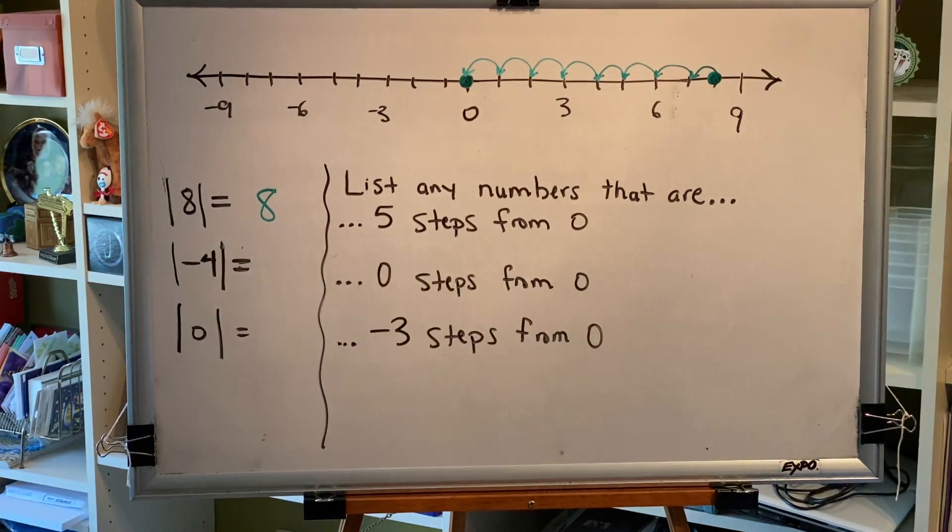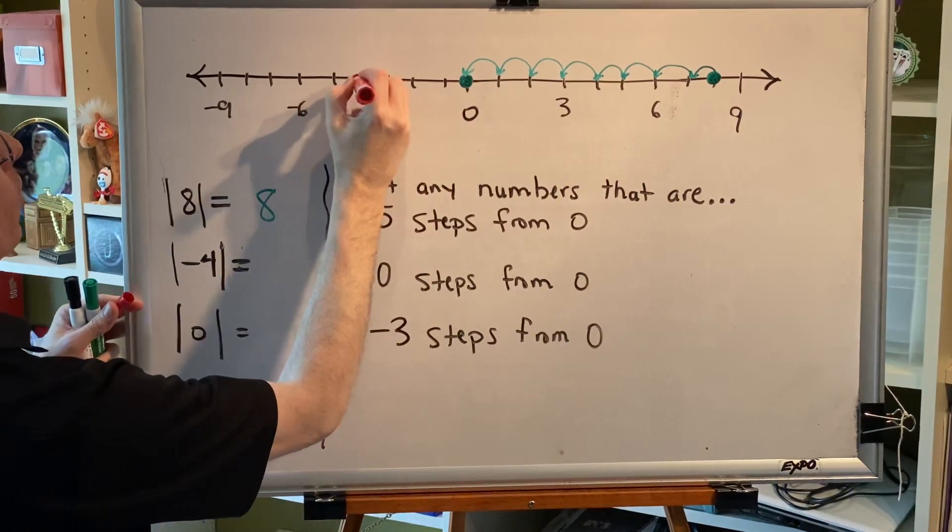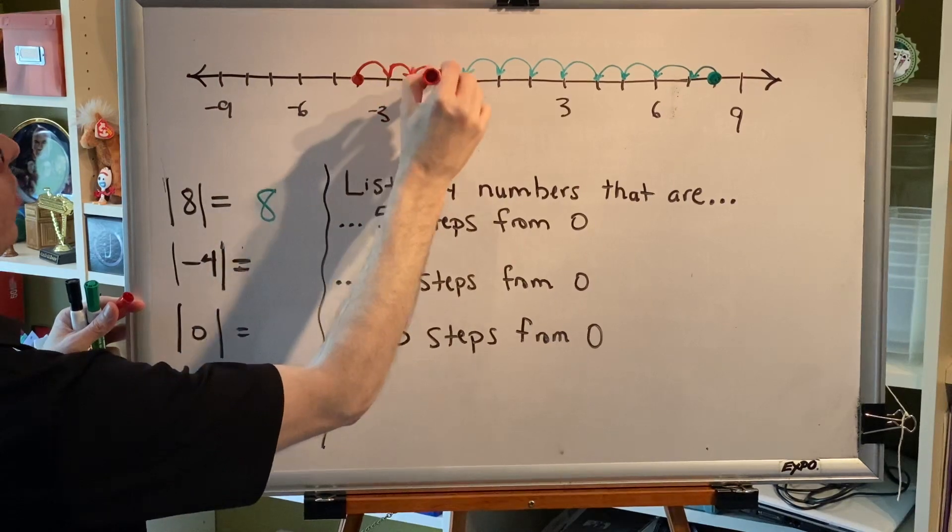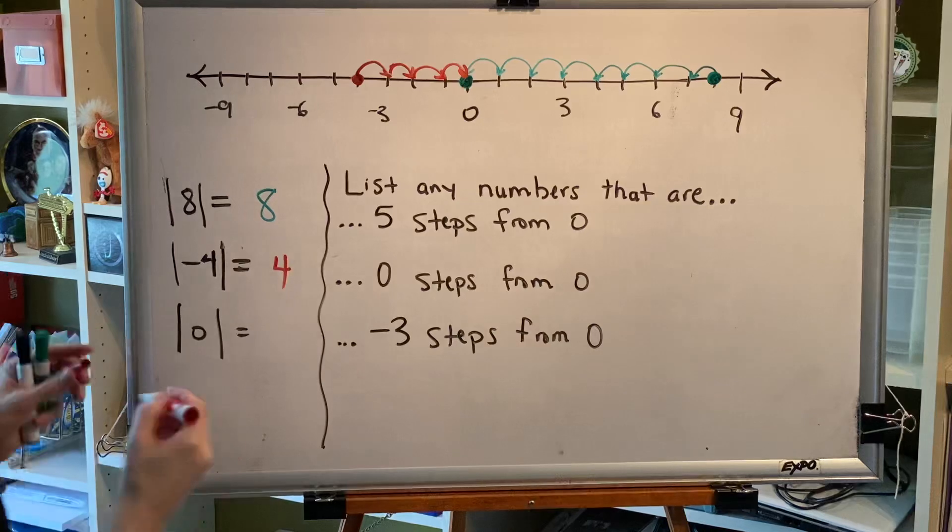Let's try another one. What's the absolute value of negative four? Negative four is here on the number line. Counting the steps to zero. One, two, three, four. The absolute value of negative four is four.